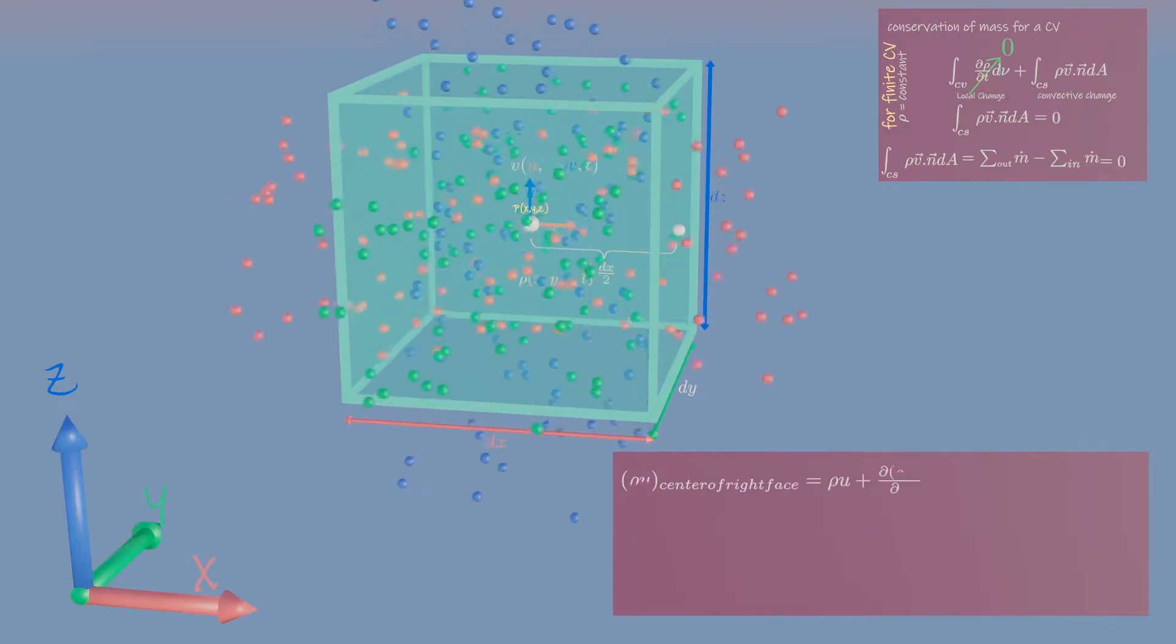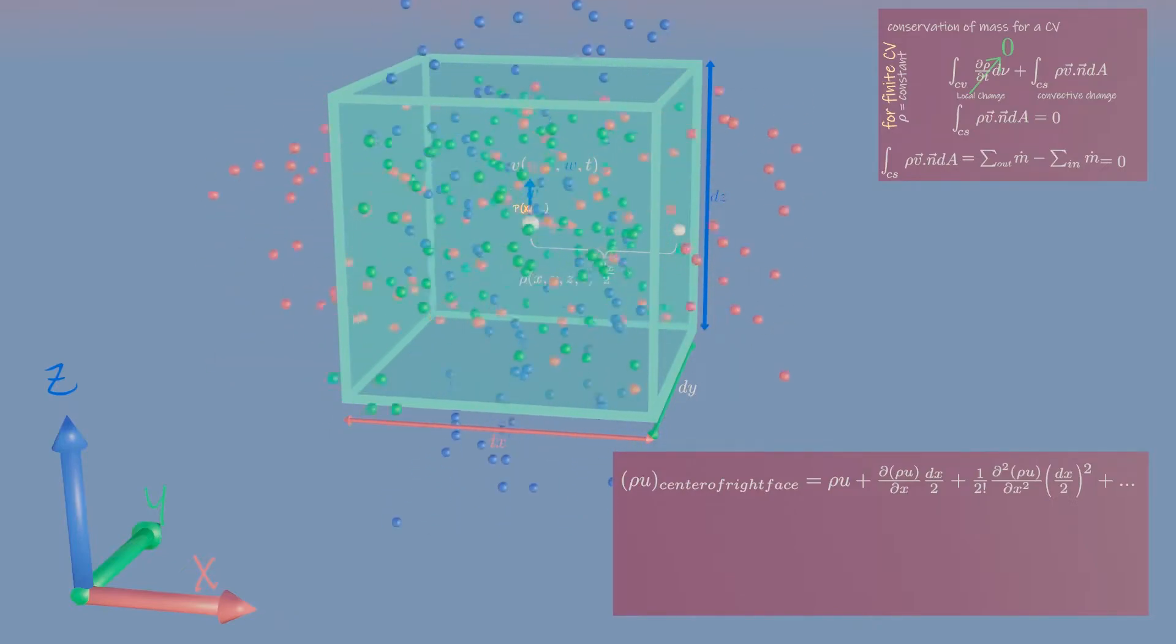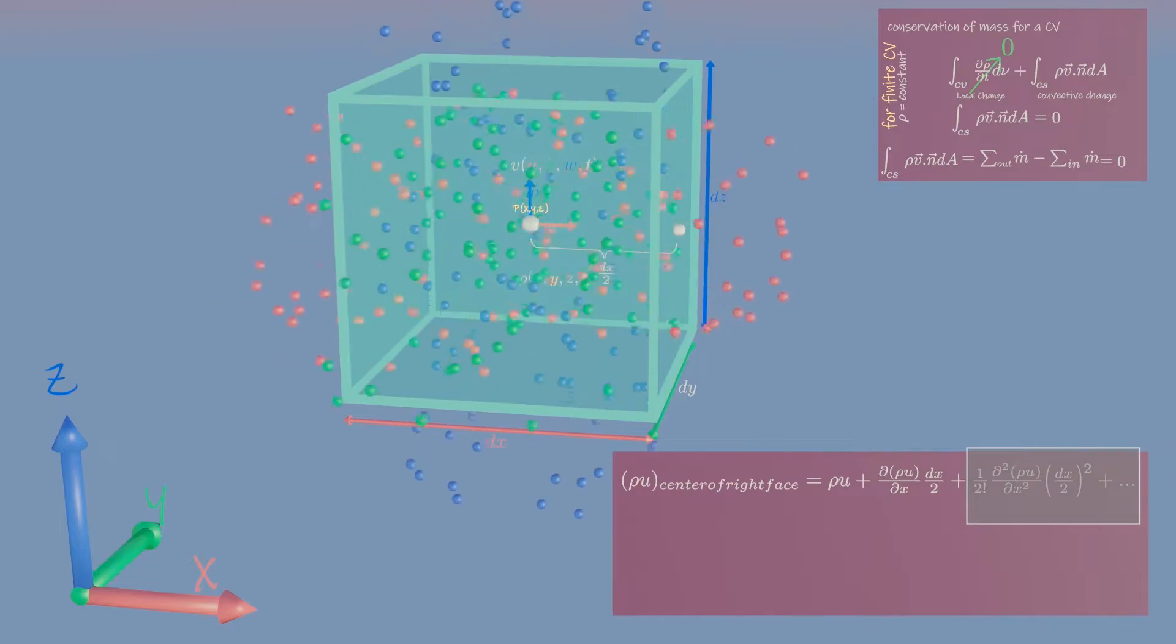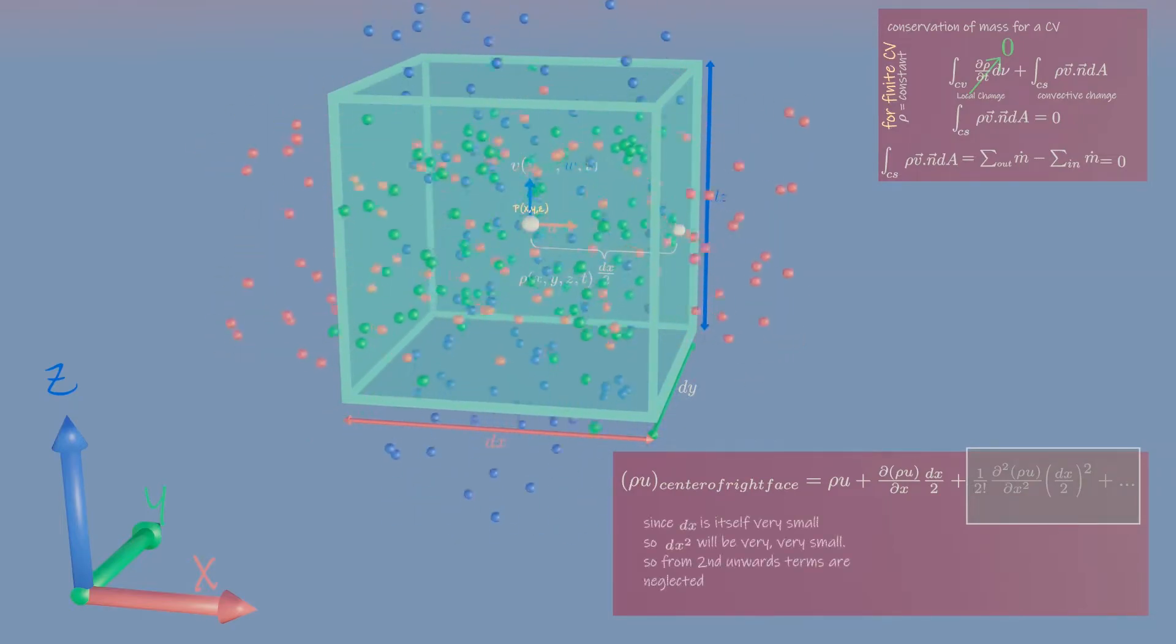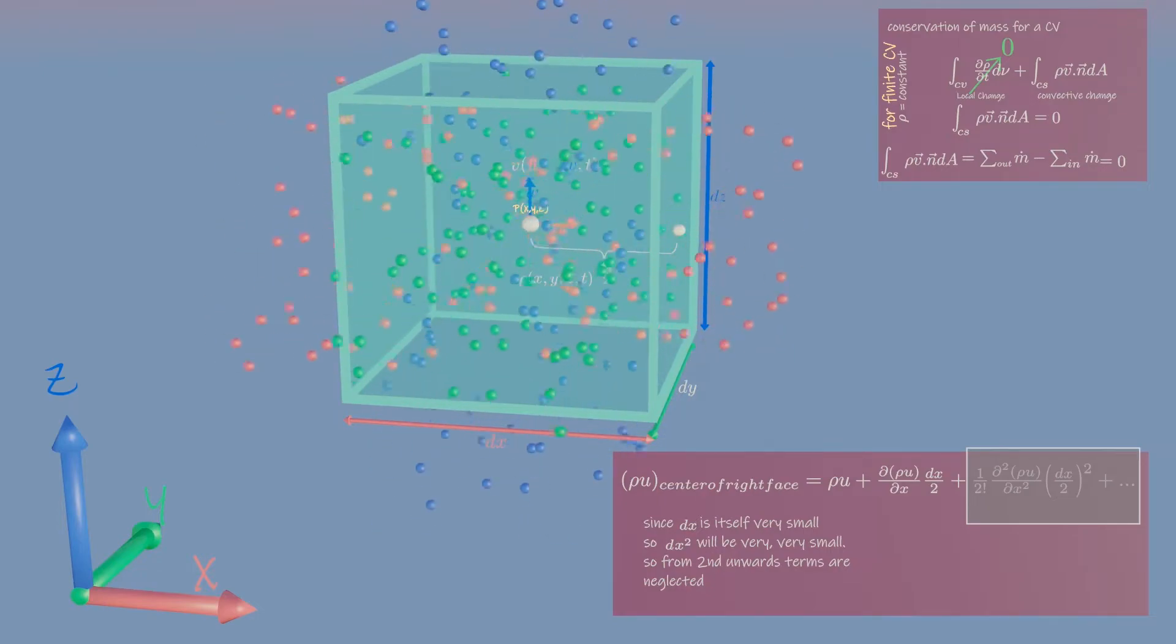The value of momentum at that point is... As the box representing the control volume shrinks to a point, however, second order and higher terms become negligible. It can be neglected because dx is itself very small, so dx square will be very very small.